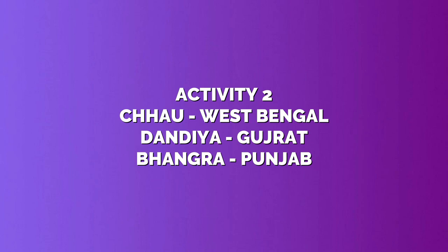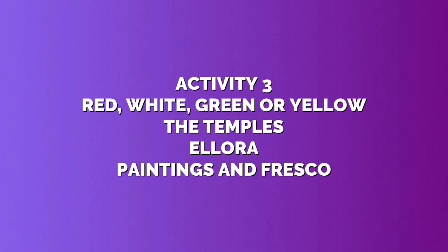In Activity 3, let's fill in the missing information. 1. The primary colors used in the rock paintings of Bhim Betka are red, white, green, or yellow. 2. Most of the Indian dances originated from temples. 3. Sculptures are found in Ellora. 4. In the caves of Ajanta, we find paintings and fresco.